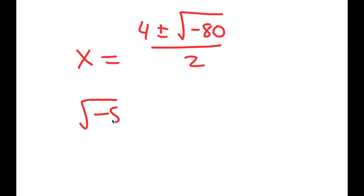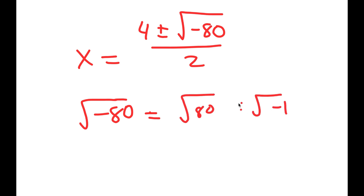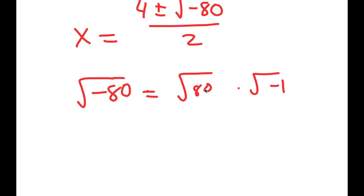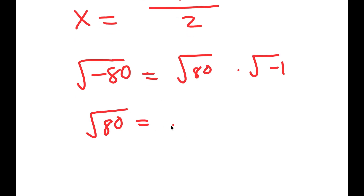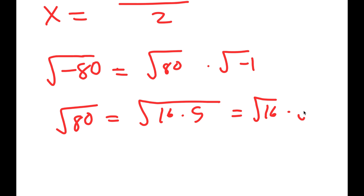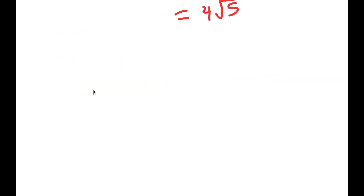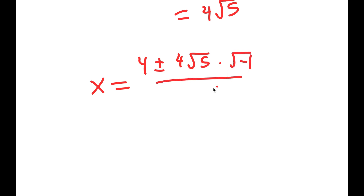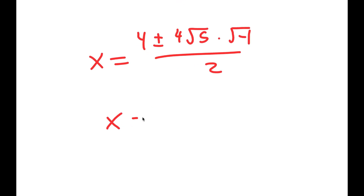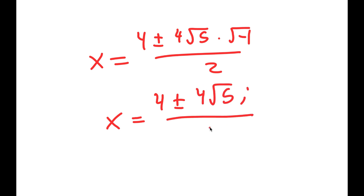The square root of negative 80 can be rewritten as the square root of 80 times the square root of negative 1. I'll first simplify the square root of 80: it equals the square root of 16 times 5, which is 4 root 5. So x is equal to 4 plus or minus 4 root 5 times i, all over 2. Since the square root of negative 1 is the imaginary number i, I get x equals 4 plus or minus 4 root 5i over 2.